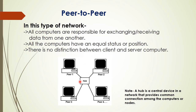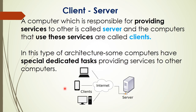There is no distinction between client and server in peer-to-peer. It is connected with the help of a hub. A hub is a central device in a network that provides a common connection among computers or nodes. In client-server architecture, one server is present and the others are clients. All clients are connected to the server. A computer responsible for providing services is called a server, and computers that use those services are called clients.